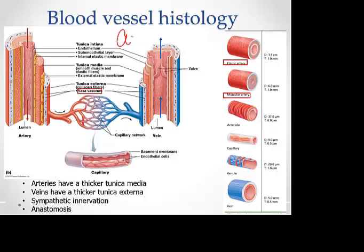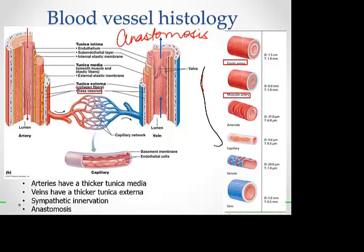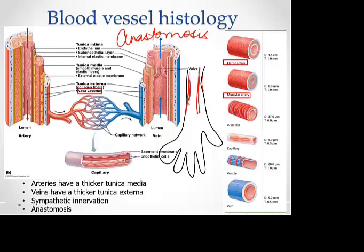In many parts of the body, arteries join each other — and sometimes veins do too, though we are usually more concerned about arteries. This joining is known as anastomosis. For example, in the palm of your hand you have two arteries: the radial artery on the lateral side and the ulnar artery on the medial side. These join each other in the palm, forming an arch called the palmar arch. A place where arteries join each other is called an anastomosis.